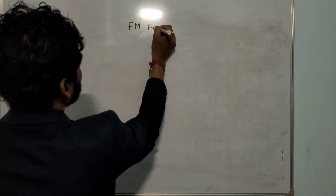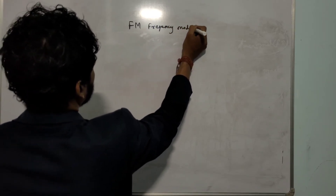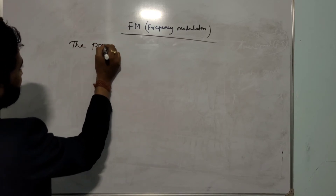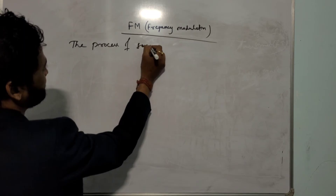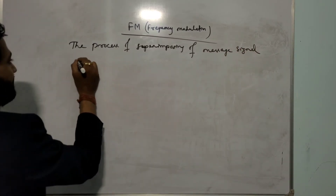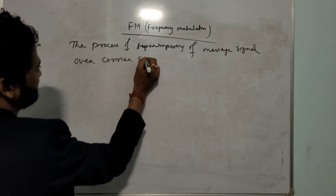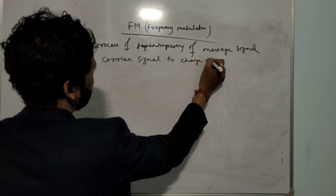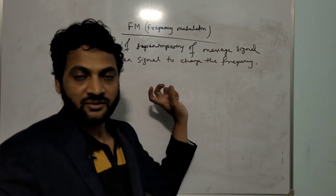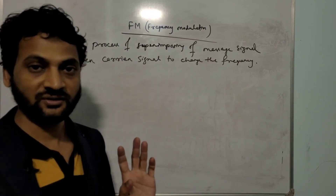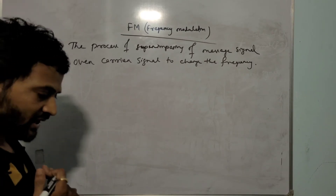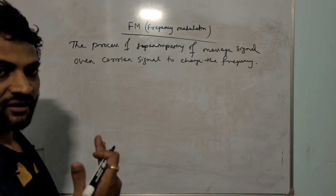Next is frequency modulation. What is frequency modulation? Frequency modulation means the process of superimposing the message signal over the carrier signal to change the frequency of the modulated signal. The modulated signal which will be formed will have a changed frequency, but amplitude will remain the same. Keeping amplitude constant while changing frequency — that process is frequency modulation. The carrier signal has to change its frequency with respect to the message signal.